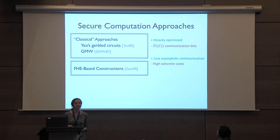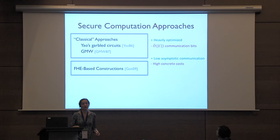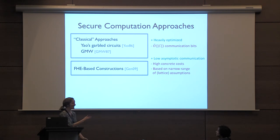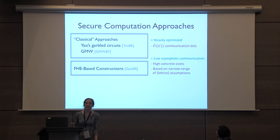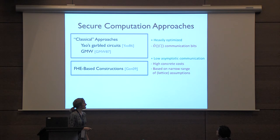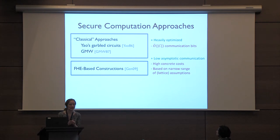This is fantastic in terms of asymptotic costs, but there are a lot of downsides when you look at concrete costs. There's been tremendous progress in optimizations since 2009, but there's still much to be desired. One negative, both theoretically and practically, is that all FHE-based constructions essentially rely on the same narrow window of noisy encodings based on lattices. There are generic lattice attacks, meaning you have to crank up security parameters, which contributes to poor efficiency.